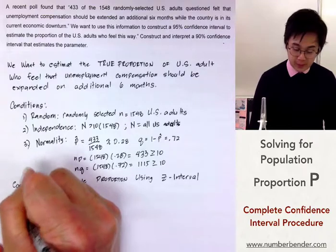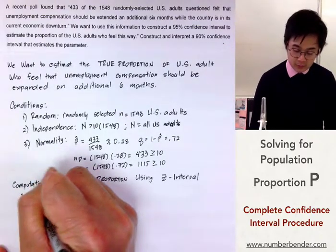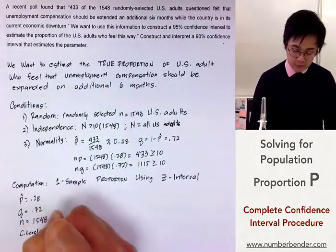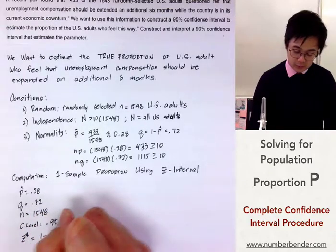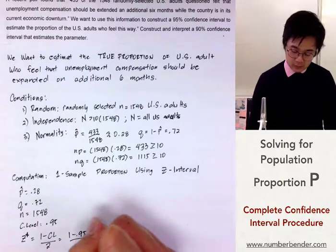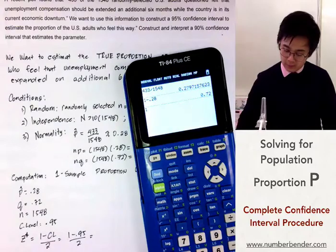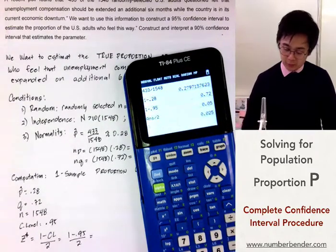We'll be using p-hat, which is 0.28, and our z-star, which is 1 minus confidence level. So 1 minus 0.95 divided by 2 is 0.025.